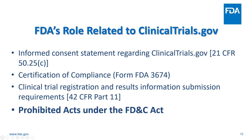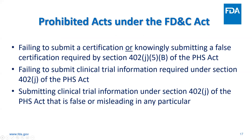Finally, I will briefly touch on the prohibited acts under the Food, Drug, and Cosmetic Act for clinicaltrials.gov. Subpart E of the final rule describes the actions FDA can take for failure to comply. The three prohibited acts are: failing to submit a certification of compliance or knowingly submitting a false certification required by Section 402(j) of the Public Health Service Act; failing to submit clinical trial information as required by Section 402(j) of the PHS Act — for example, failing to register, failing to submit results, or failing to update the clinicaltrials.gov record; and submitting clinical trial information that is false or misleading.